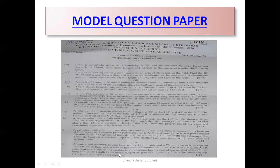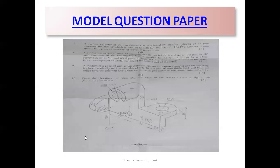For unit three, questions 5 and 6 cover solids. Question 5 gives a cylinder inclination problem inclined to both planes, and question 6 is a pentagonal pyramid where you draw the sectional top view — so one is a solid inclination and the other is a sectional view. For unit four, questions 7 and 8 involve a vertical cylinder penetration problem — cylinder versus cylinder intersection — and question 8 is a pentagonal prism where you draw the development of the lateral surface. This covers both intersection and lateral surface development.